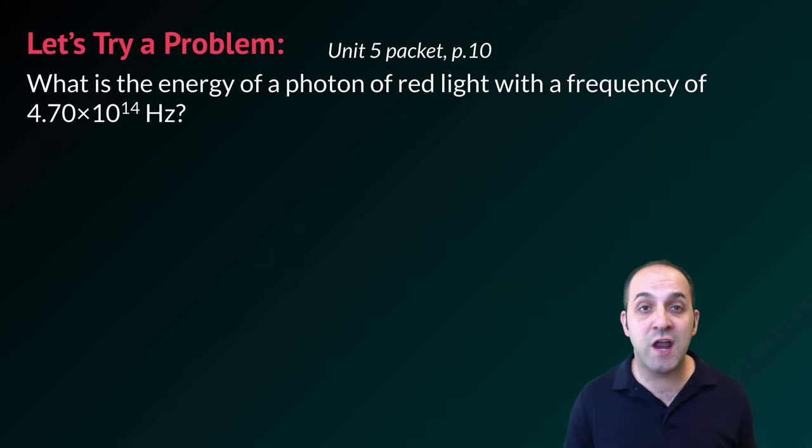So this is also from page 10 of your unit 5 packet. And the question is, what is the energy of a photon of red light with a frequency of 4.70 times 10 to the 14 hertz? Pause the video, take a moment and solve it on your own. And then when you're ready, let's go through and look at it together.